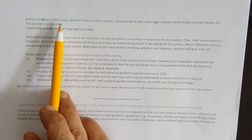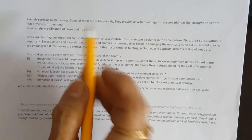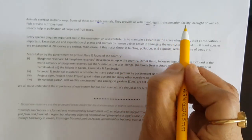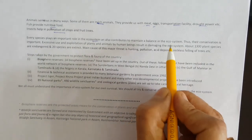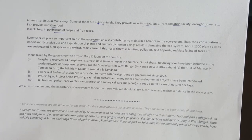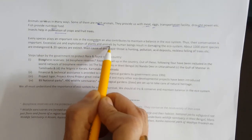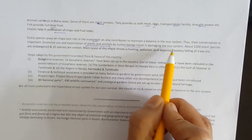Animals enrich our life in many ways. Many are domesticated; some are milk animals. They provide us with meat, eggs, transportation, draught power, and can be used in agricultural activities. Fish provide nutritive food, and insects help in pollination of crops and trees. Each species plays a very important role in the ecosystem and maintains its balance. However, because of our excessive need and greed, there is exploitation of plant and animal life by human beings, which has resulted in damaging the ecosystem.